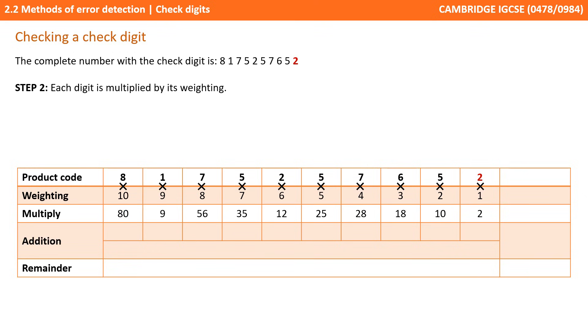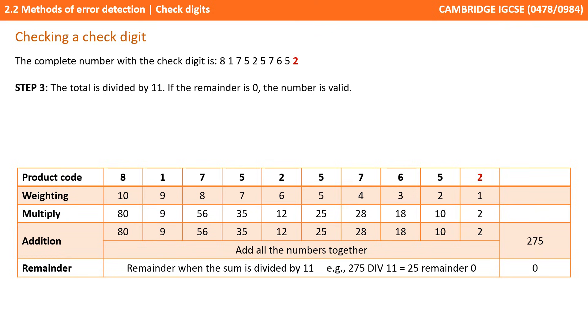Just like before we multiply each digit by its weighting and then sum up the results of all those multiplications. So now we've got the number 275. The total is divided by 11 again and if the remainder is 0, which it is in this circumstance, we know the number is valid.